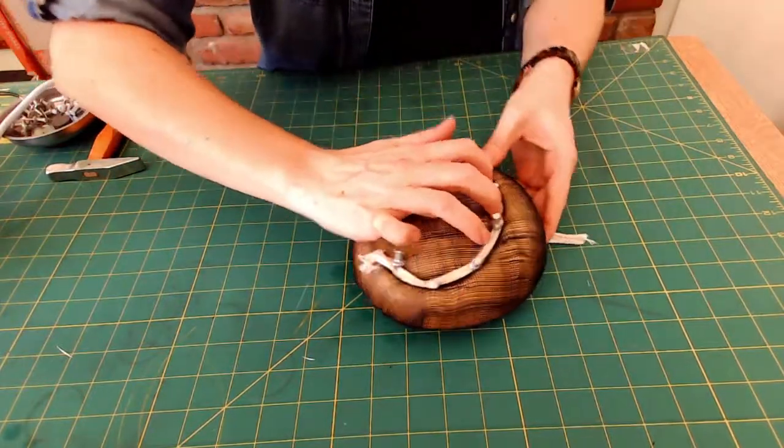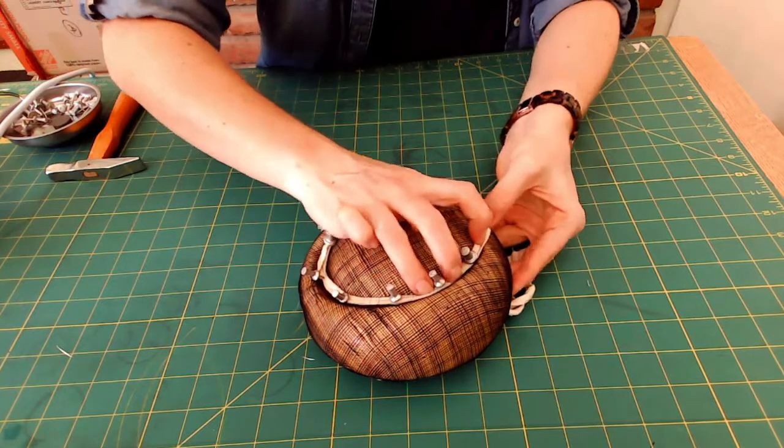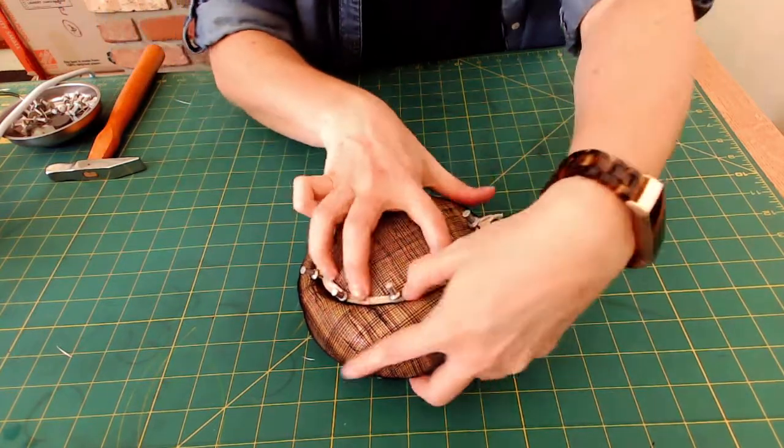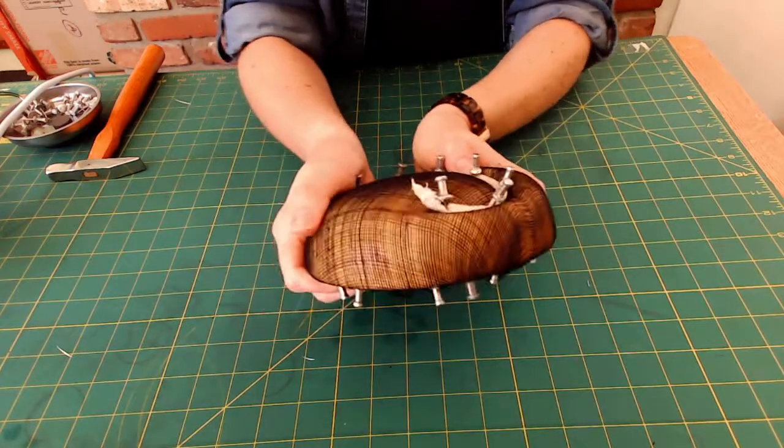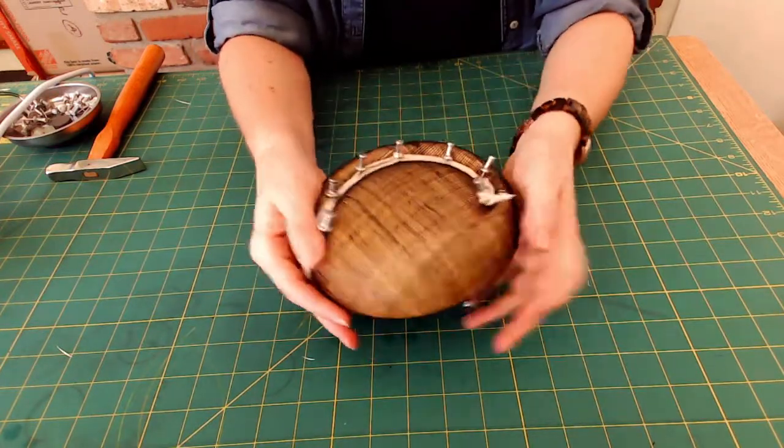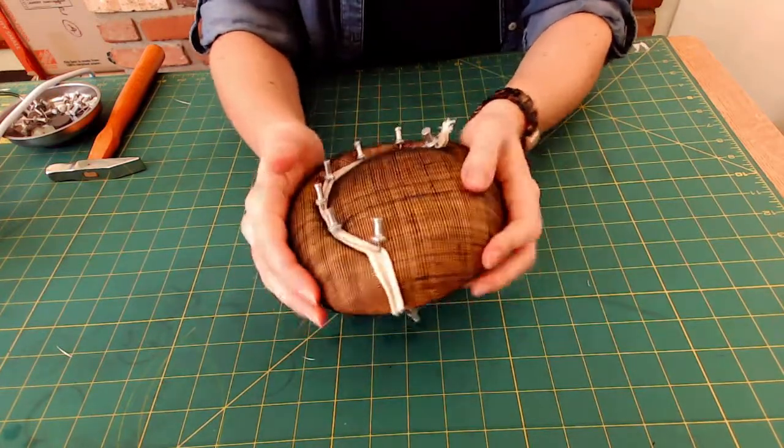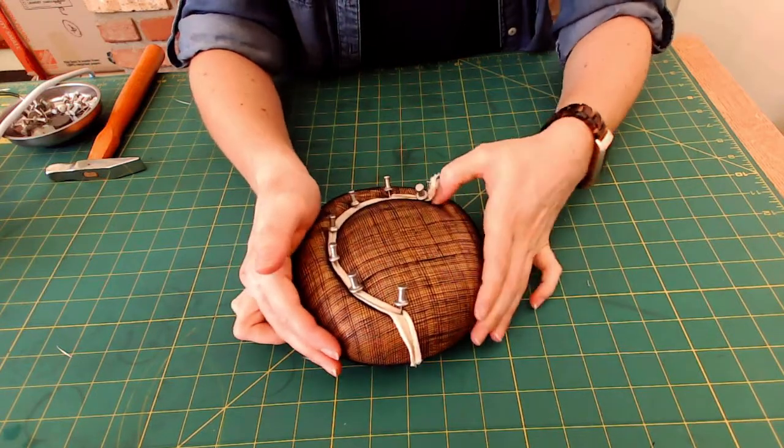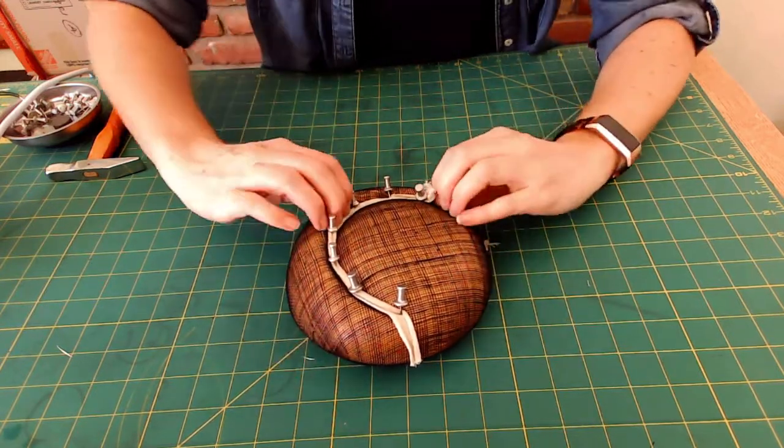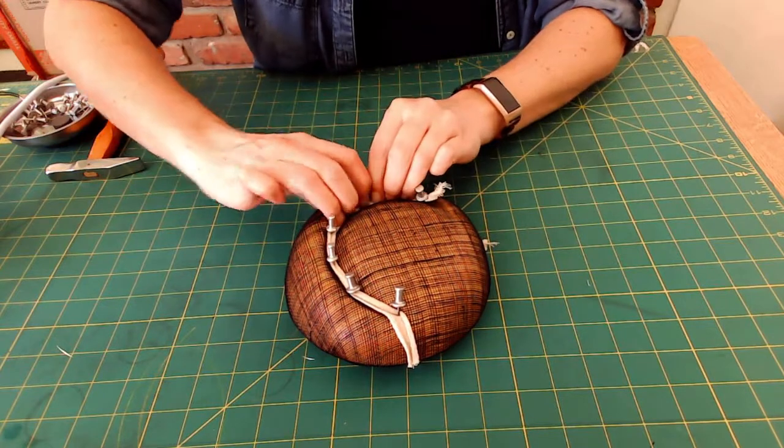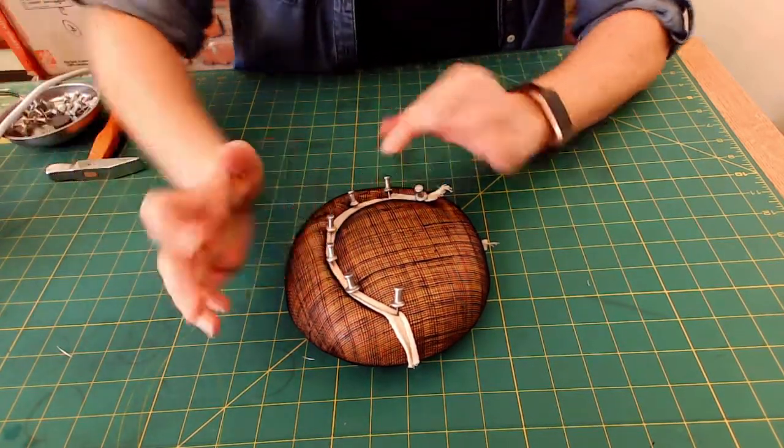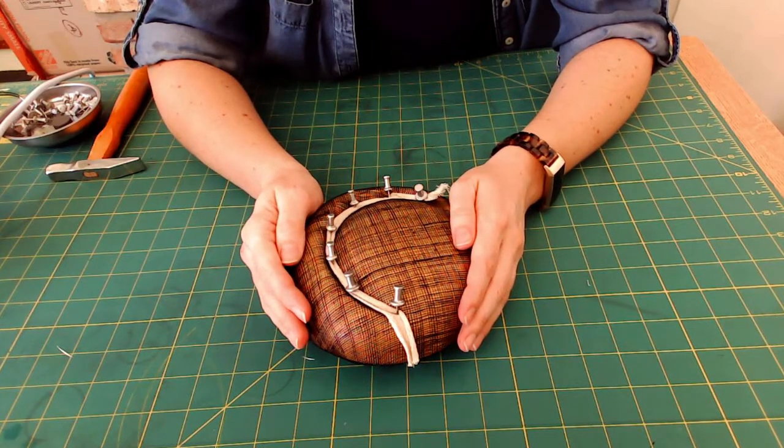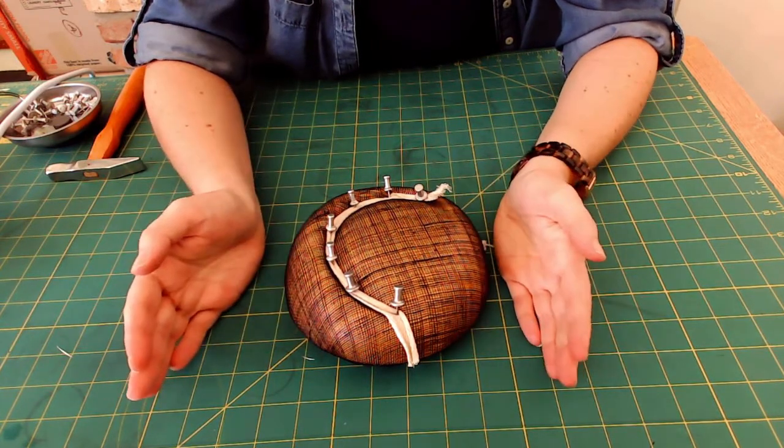And I'm just pushing everything in the crease so that it really gets that defined shape. And I'm going to make sure the edges around are nice and tight. And then what I do is you're just going to let it cool and dry. So you don't want to take the pins out until everything is dry. If you take them out while it's still wet, you'll lose your shape. So I'll just wait, and then once it's dry, we'll finish the hat.